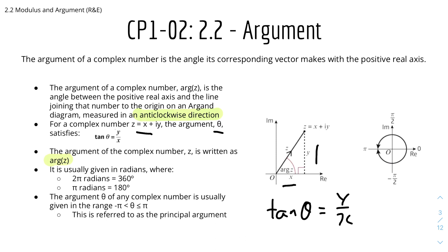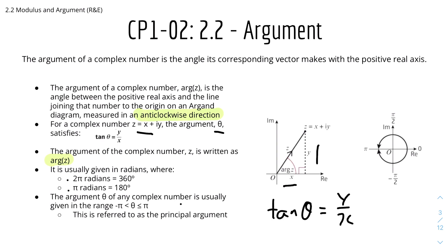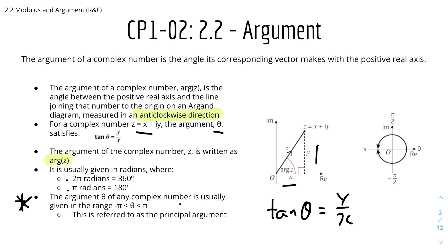The answer is usually in radians, so you have to make sure that you know what radians are. Here is a quick recap: 2 pi radians equals 360 degrees, and pi radians equals 180 degrees. One key thing to note: the argument theta of any complex number is usually given in the range minus pi less than theta less than or equal to pi. This is referred to as the principal argument.